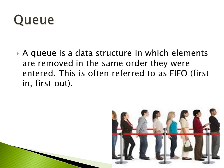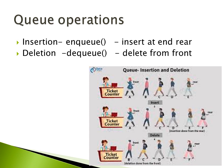A queue has two ends: one is the front and the other is the rear. From the rear we keep inserting data, and from the front we remove items. It works like a person moving to a ticket counter followed by many people. The first person who reaches the ticket counter is pointed by the front pointer; once they get a ticket, they are removed from the queue.